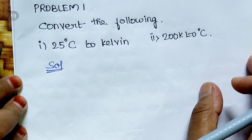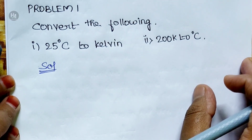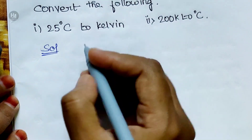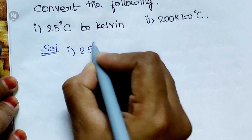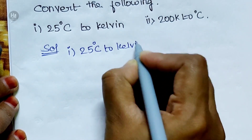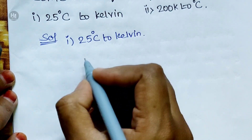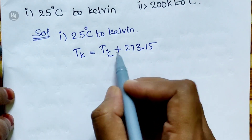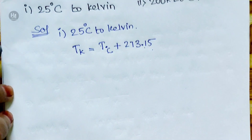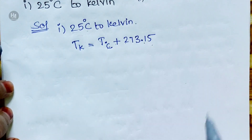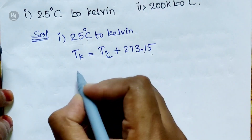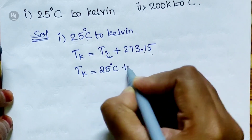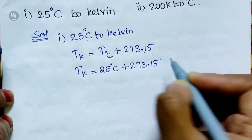First subdivision: 25 degrees Celsius to Kelvin. The formula is TK is equal to TC plus 273.15. Now we substitute: 25 degrees Celsius plus 273.15.